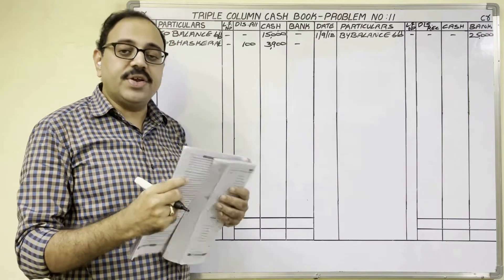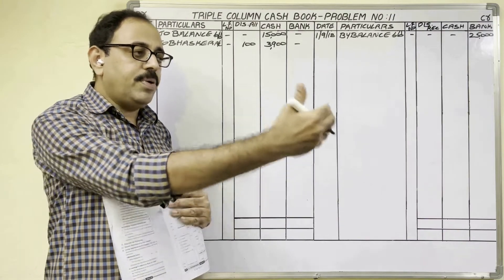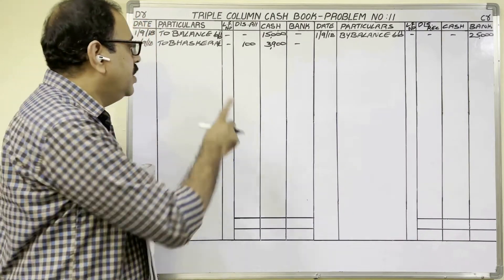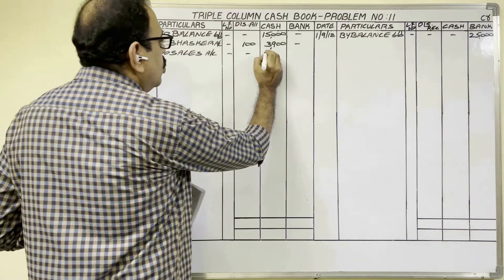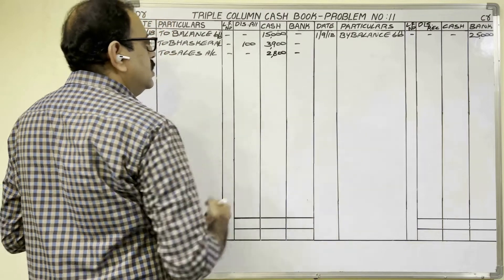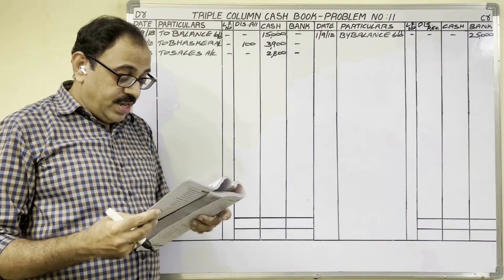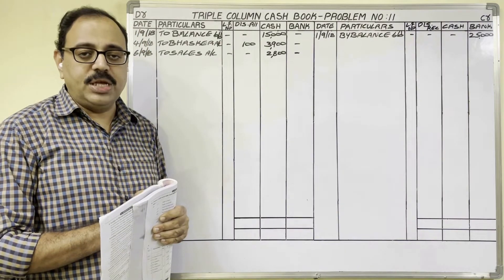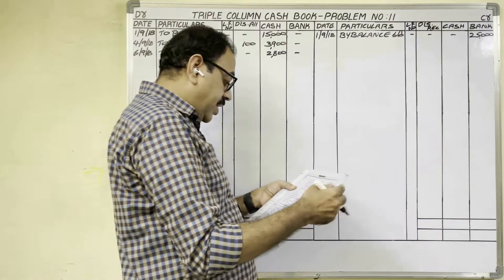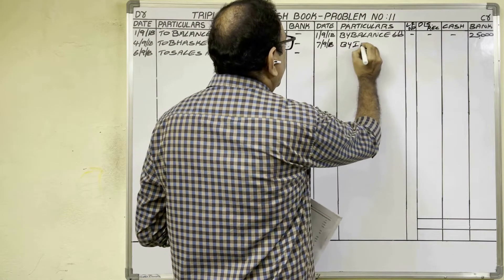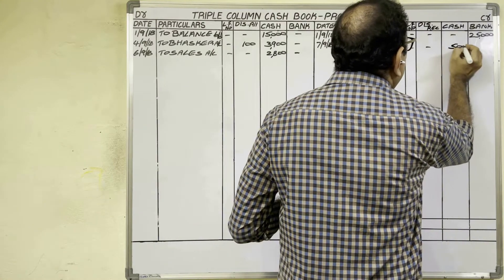6th date: goods sold to Prekosh for cash 2,800 rupees. The firm is selling goods and receiving cash, so on the debit side write 'to sales account' — cash column 2,800 rupees. We do not write the customer's name in cash sales. 7th date: interest paid 500 rupees. The firm is paying interest on a loan, so cash is going out — credit side, write 'by interest account' in the cash column, 500 rupees.